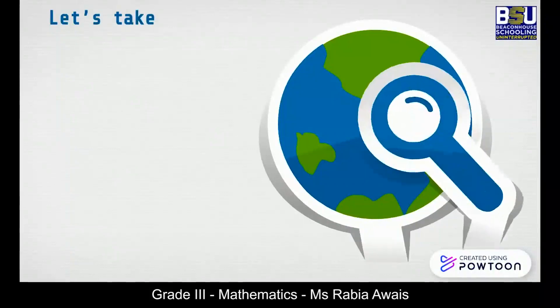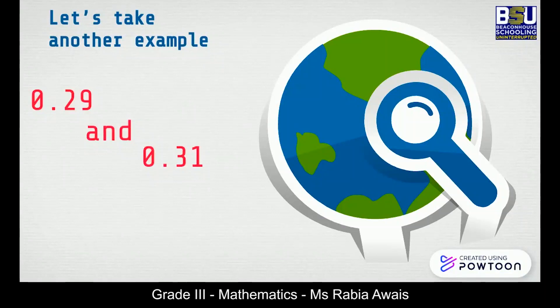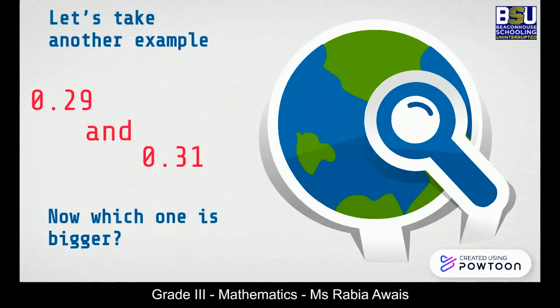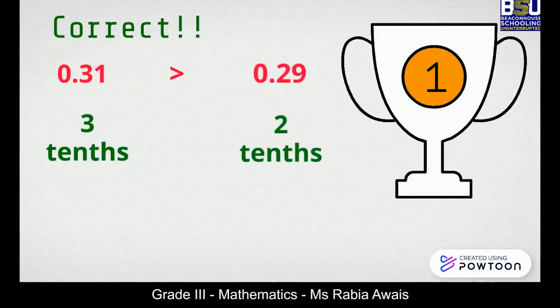Let's take another example: 0.29 and 0.31. Now, which is the bigger number? Correct — that's because 0.31 has three tenths in it, whereas 0.29 has only two tenths in it.